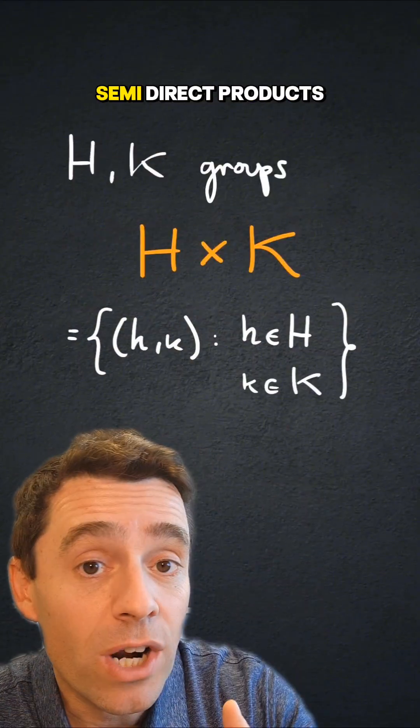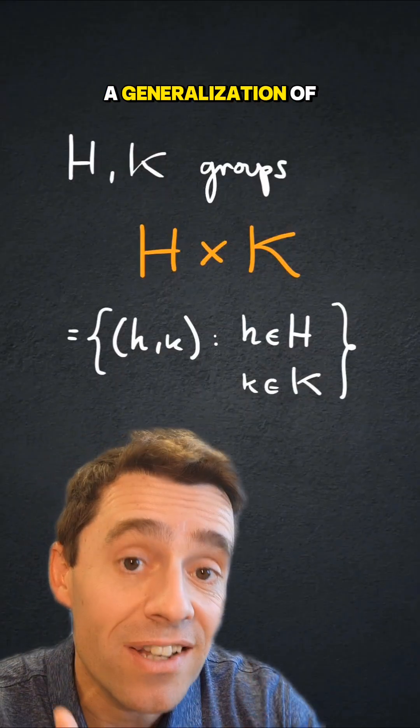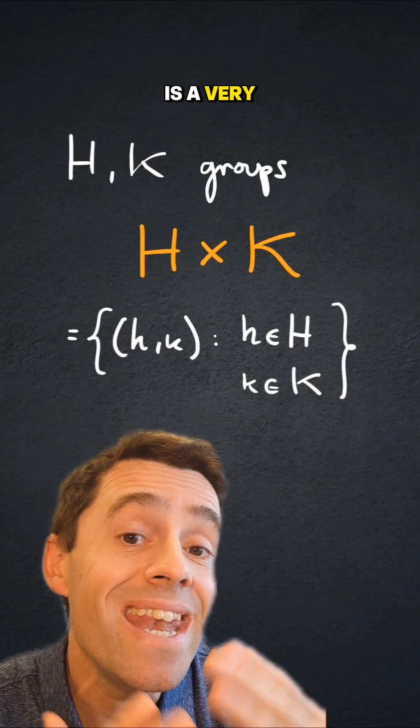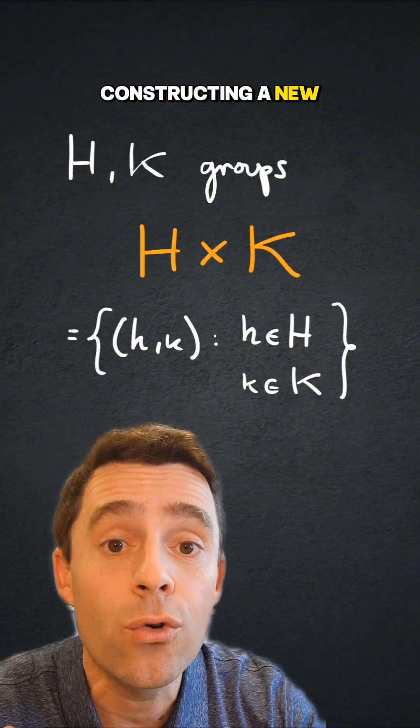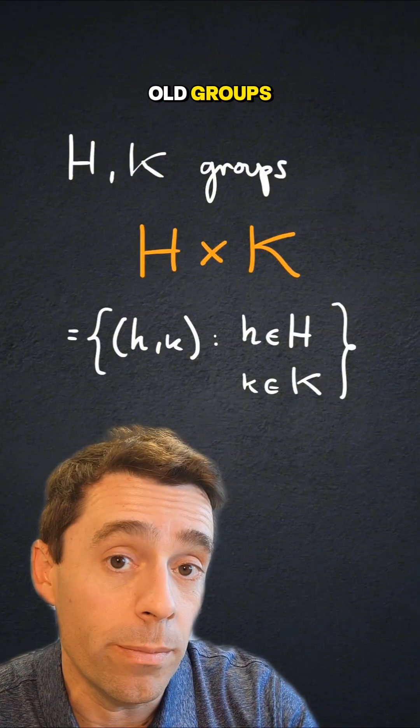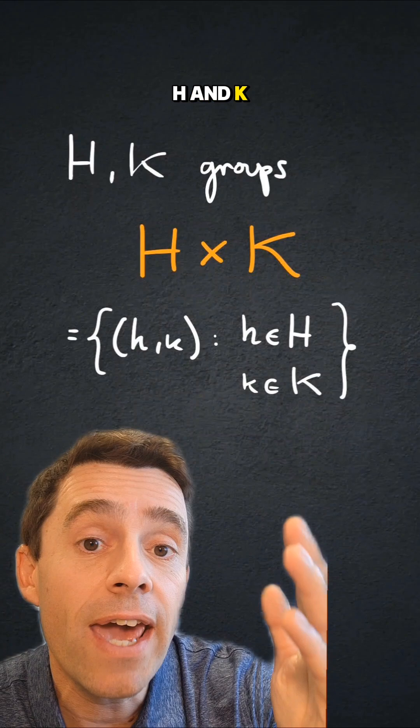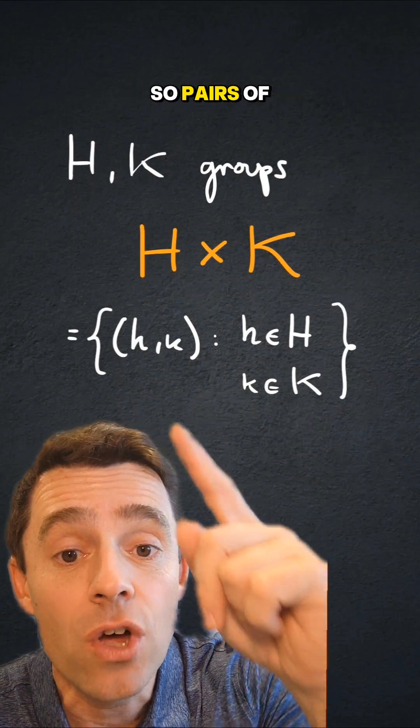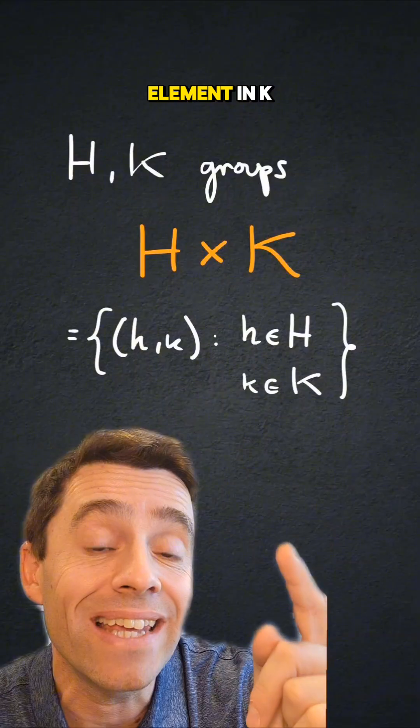So the reason why we study semi-direct products is because it's a generalization of direct products. And direct products are a very nice way of constructing a new group from two old groups. A direct product of two groups, h and k, is the direct product as sets, so pairs of an element in h with an element in k.